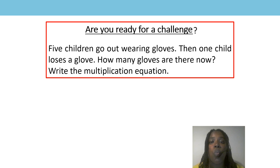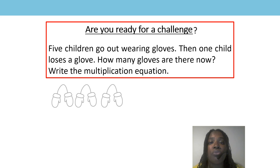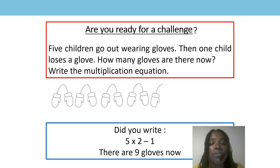Mrs. Parr also gave you a challenge. How did you get on? Let's look at it again. 5 children go out wearing gloves. Then 1 child loses a glove. How many gloves are there now? Write the multiplication equation. We know that 5 children each have 1 group of 2 gloves. So let's count: 1 two is 2, 2 twos are 4, 3 twos are 6, 4 twos are 8, 5 twos are 10 — so that's 10 gloves. But then 1 child loses a glove, so how many gloves are there now? That's right — there are 9 gloves now. Did you write 5 times 2 take away 1? That's right. Well done!